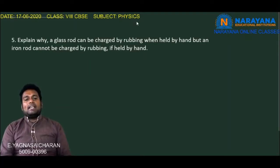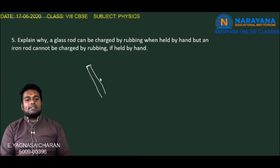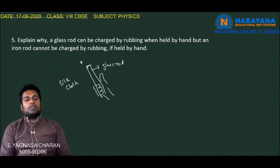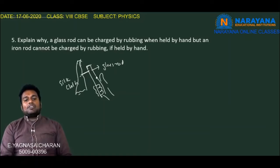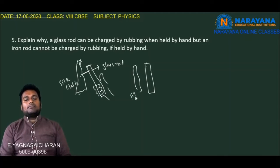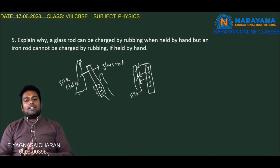Let us see the fifth question: Explain why a glass rod can be charged by rubbing when held by hand, but an iron rod cannot. If we rub a glass rod with a silk cloth, the electrons present on the glass rod are transferred to the silk cloth. Due to the deficiency of electrons created, the glass rod attains a positive charge. As the charges created are static in nature, all the charges reside on the surface of the glass.